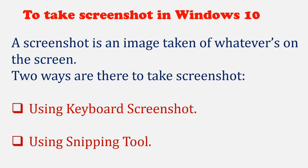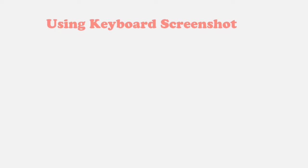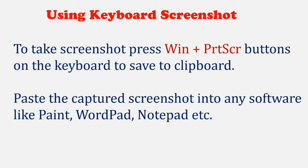To take a screenshot in Windows 10: a screenshot is an image taken of whatever is on the screen. There are two ways to take a screenshot — using the keyboard and using the Snipping Tool. Using the keyboard: press Windows key plus Print Screen button to save to clipboard, then paste the captured screenshot into any software like Paint, Wordpad, or Notepad.